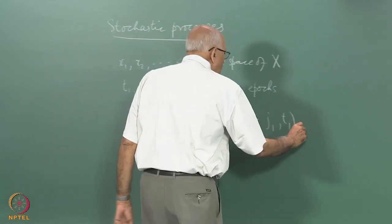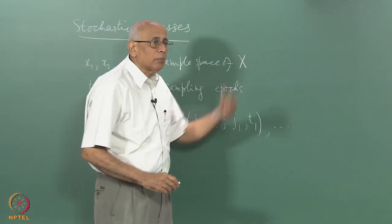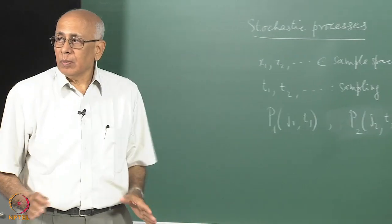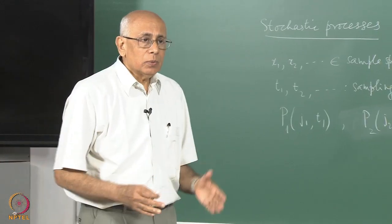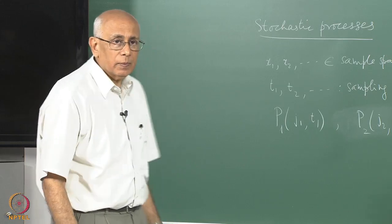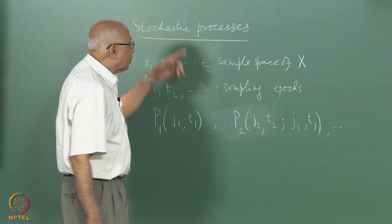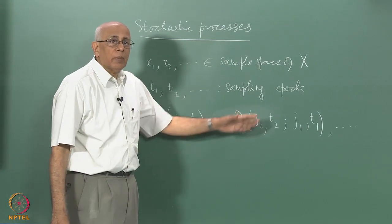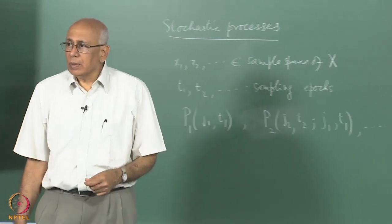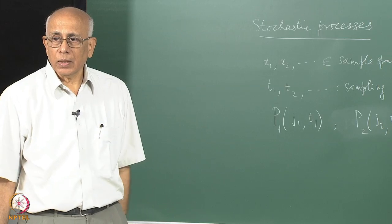Clearly this can go on. I can look at the three-time probability, the four-time probability, and so on. Now to specify this random process completely I need to tell you all these joint probabilities. So the first thing we learn is that a stochastic process is described by an infinite hierarchy of probabilities, or in the case of continuous variables probability densities — an infinite hierarchy to start with.